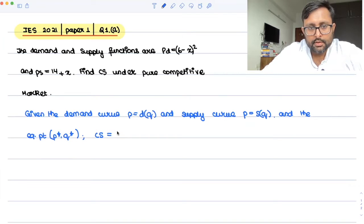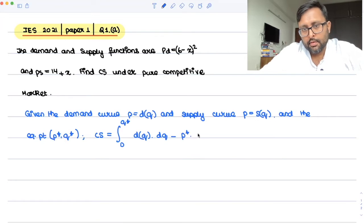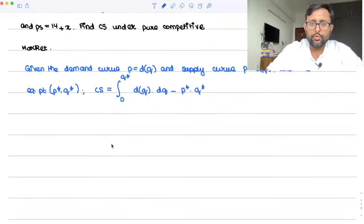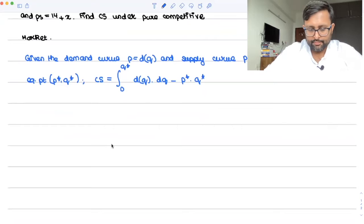Consumer surplus is integral 0 to q star dq dq minus p star q star, integral 0 to q star dq dq minus p star, right?